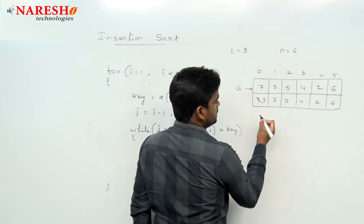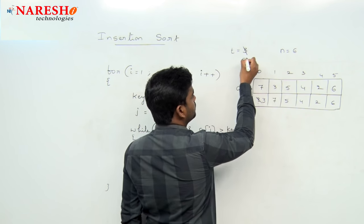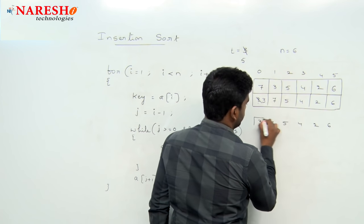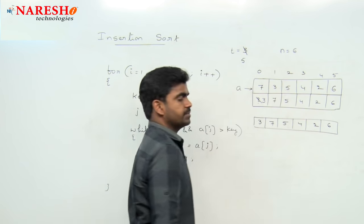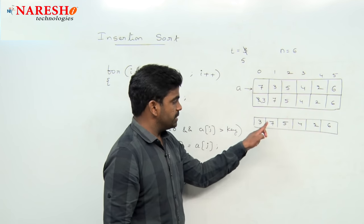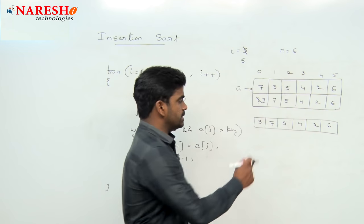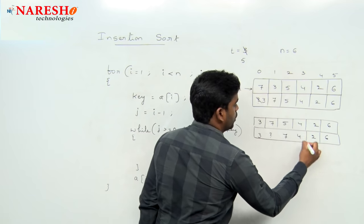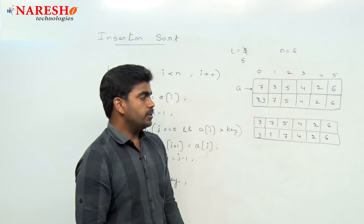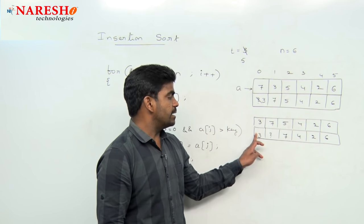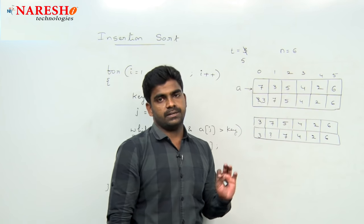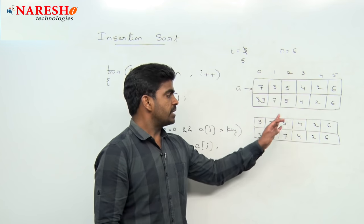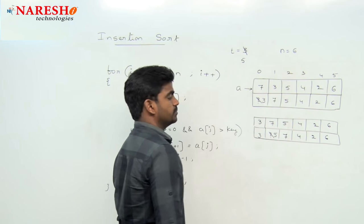In the next iteration, here it is 5, so the temp value is 5. We now have the array as 3, 7, 5, 4, 2, 6. The temp value 5 is compared with 7 — whenever you find a higher value, that 7 will come here. But 5 will not be stored directly — we need to check and compare with the previous element, continuing up to the 0th location. Whenever all previous elements are lesser, you can place the value 5 there.